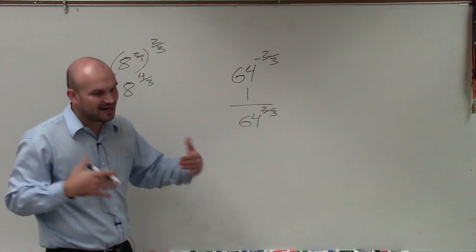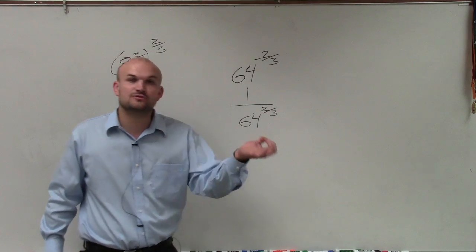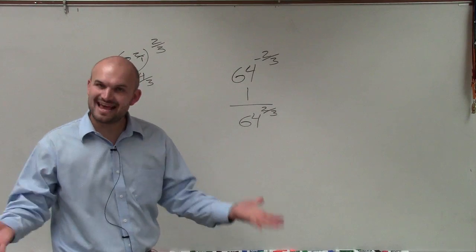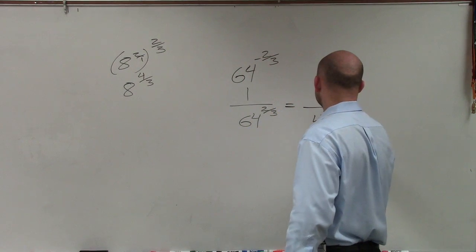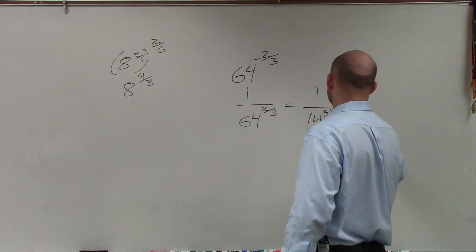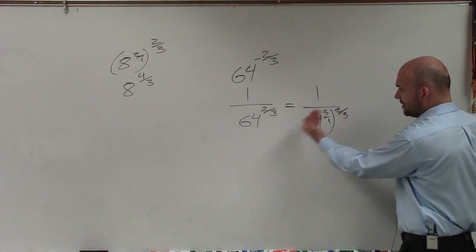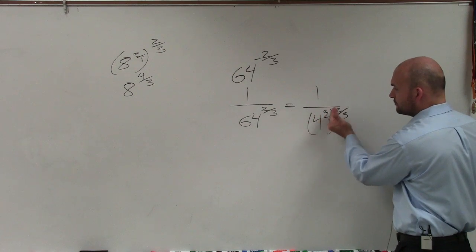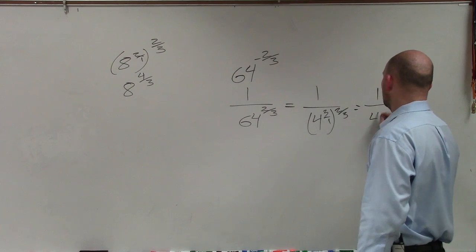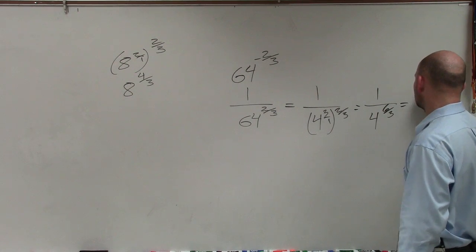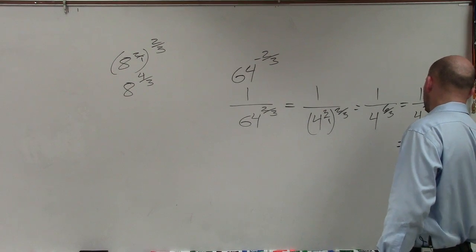So I want to say: can I rewrite 64 as a higher power? Specifically, can I write it as a base raised to the 3rd power? Thankfully, I can. I can rewrite this as 1 over 4 cubed, to the 2/3 power. Now, by using my properties of exponents — whenever you have a power raised to another power, you multiply them — that's equal to 1 over 4 to the 6/3 power, which is equal to 1 over 4 to the 2nd power, which is equal to 1 over 16.